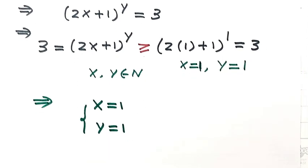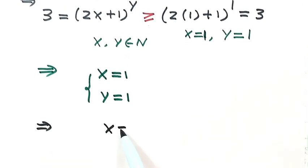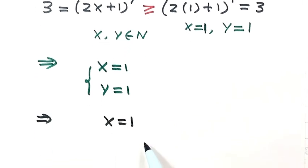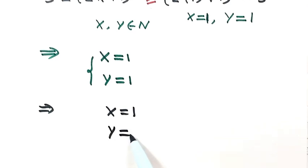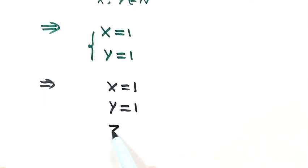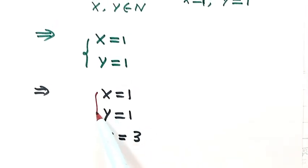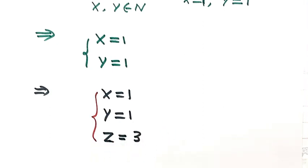So the complete solution is x = 1, y = 1, and z = 3. This is the only positive integer solution of the equation. Thanks for watching.